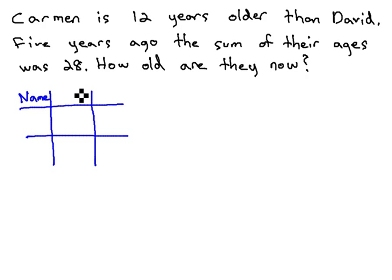The first column is for the name, the second column for the age right now, and the third column for the change, which we'll fill in in a moment.